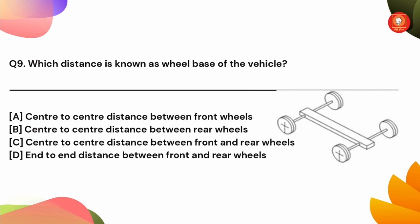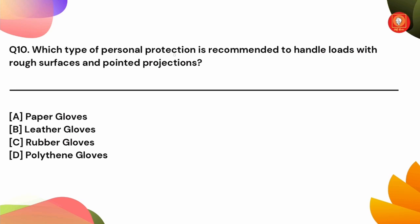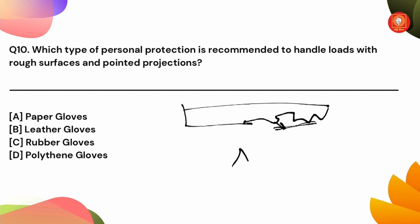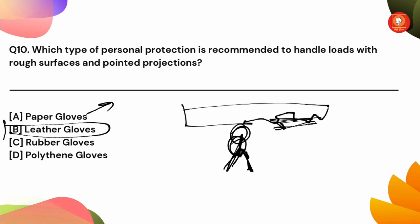Question number 10: what type of personal protection is recommended to handle loads with rough surfaces and pointed projections? Rough surfaces — you can use gloves for protection. We can use leather gloves; we can't use rubber gloves or polythene gloves. For rough edges, leather gloves provide the best protection.